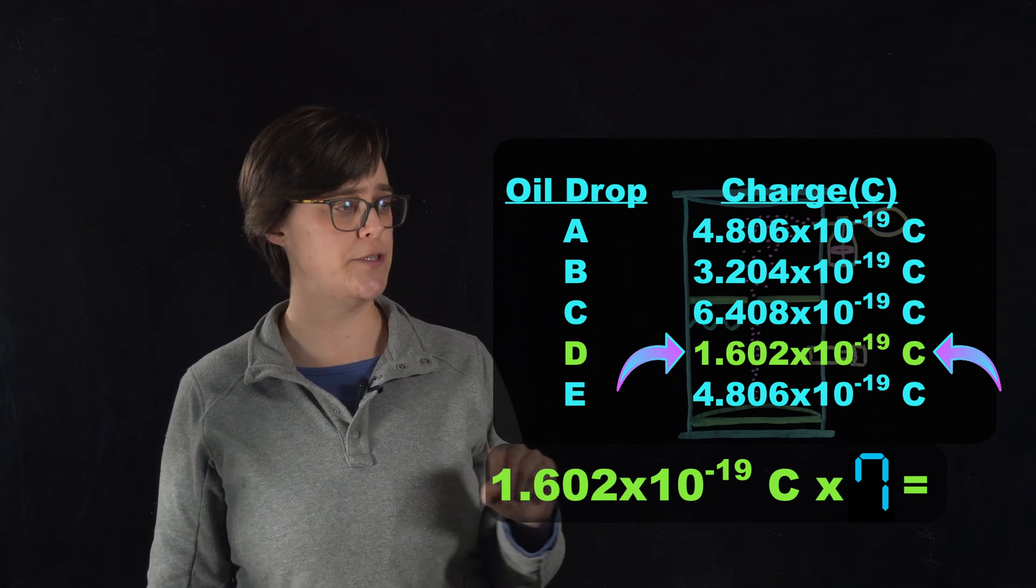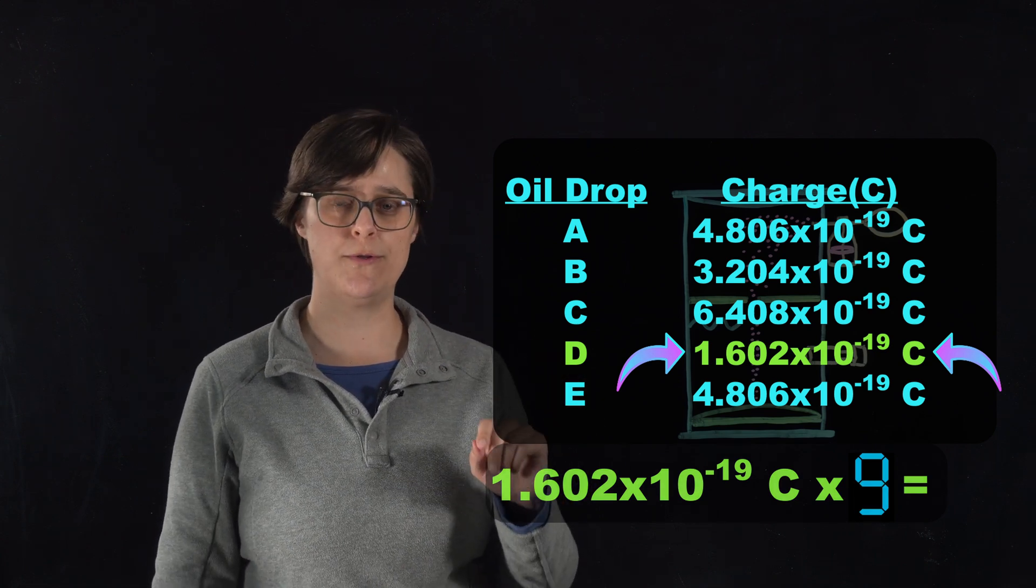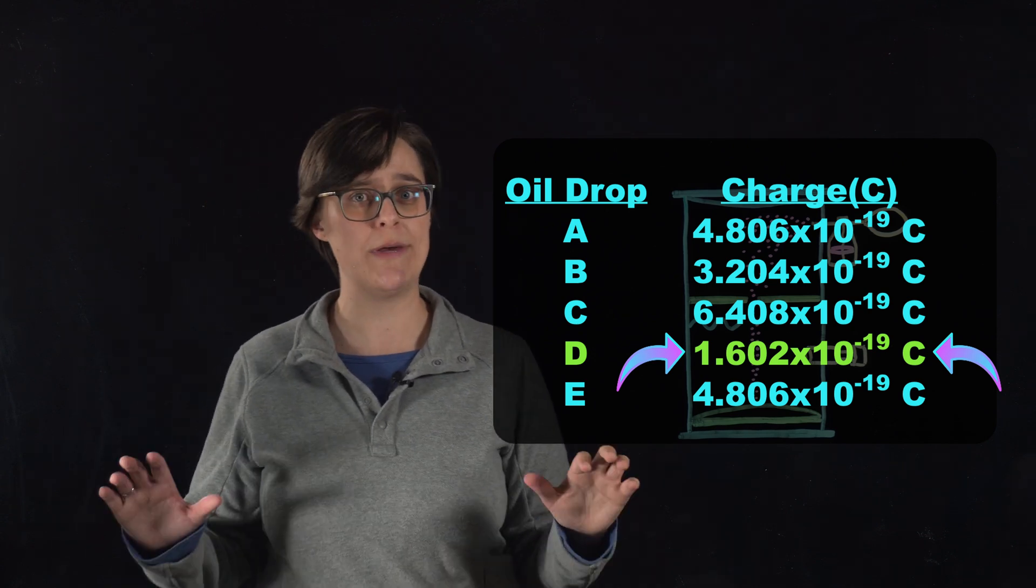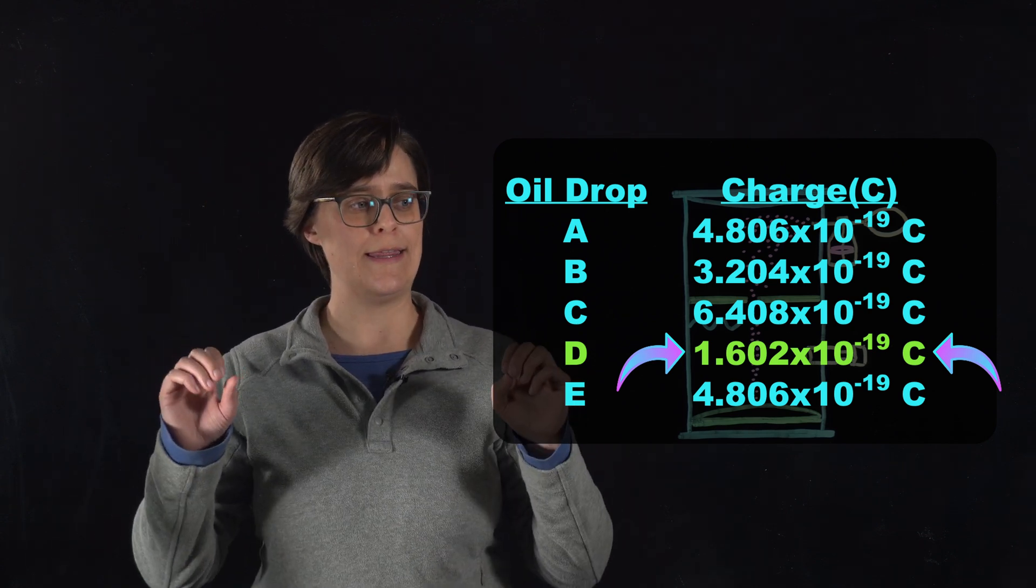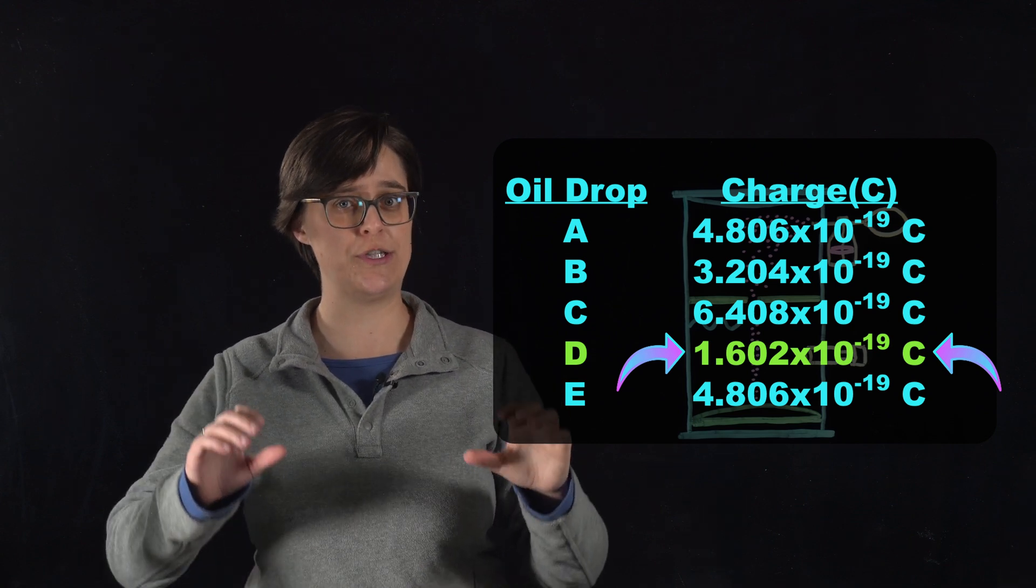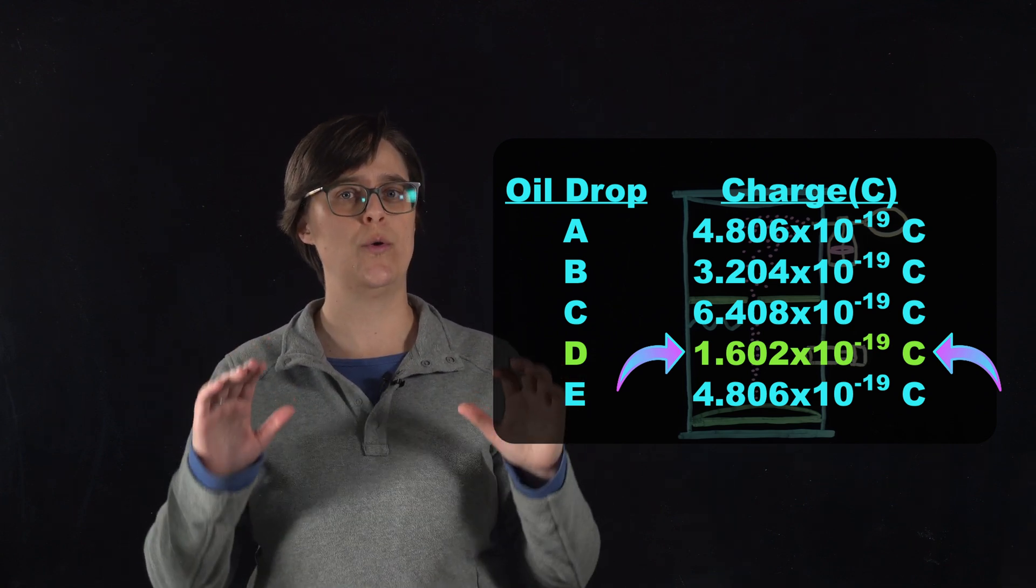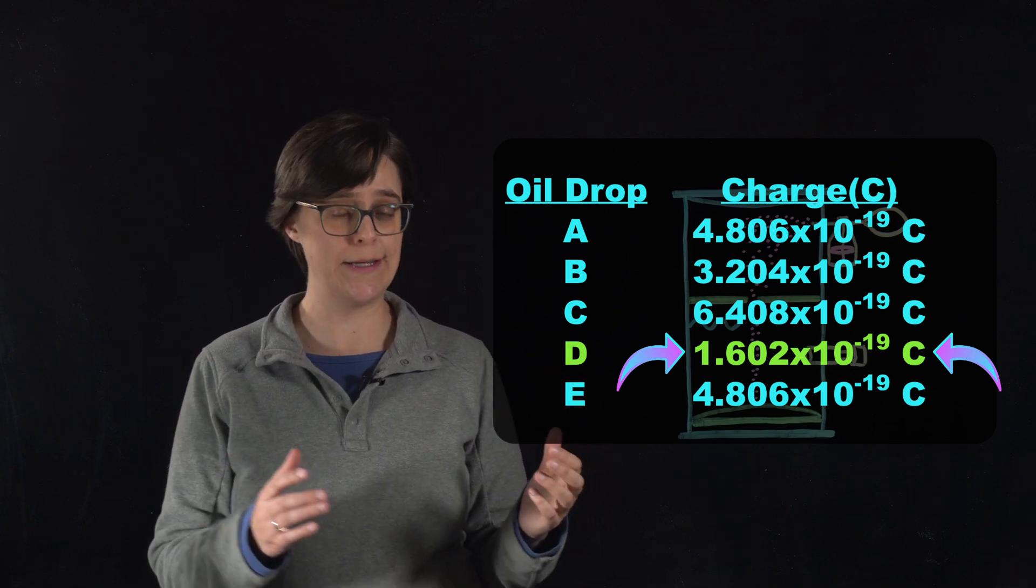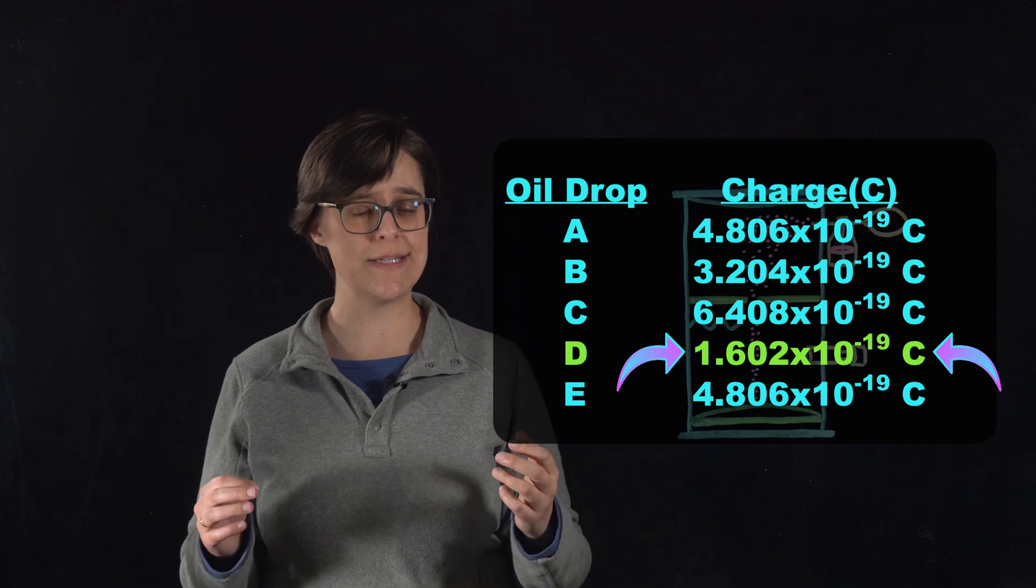Each and every one of these numbers is a whole number multiple of the smallest charge on this list. That smallest charge is 1.602 times 10 to the minus 19th Coulombs. So no matter how many measurements he took, that was the smallest charge and everything else was a whole number multiple.